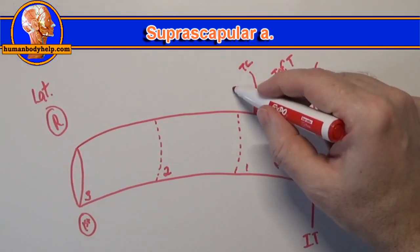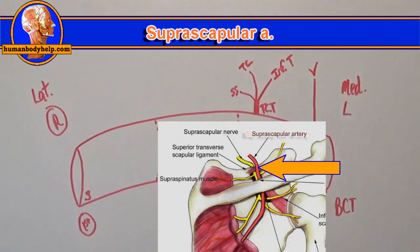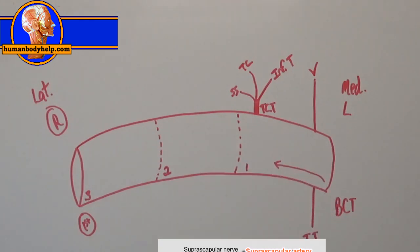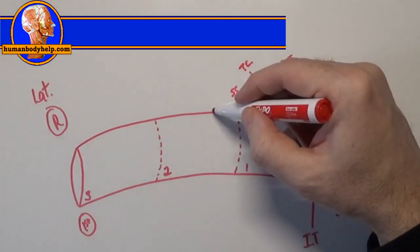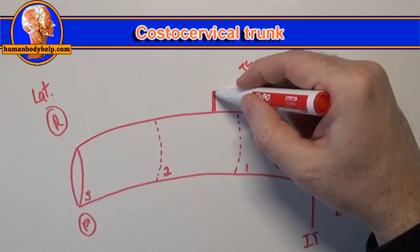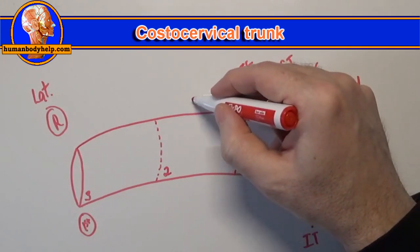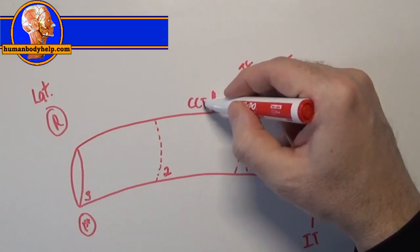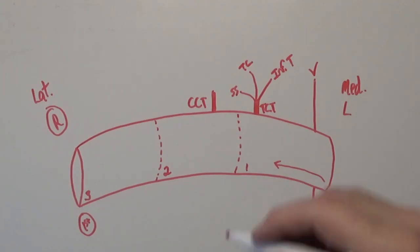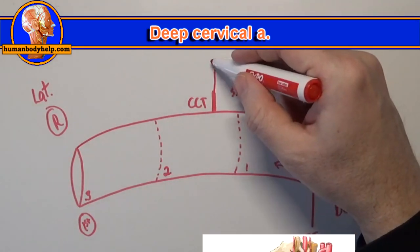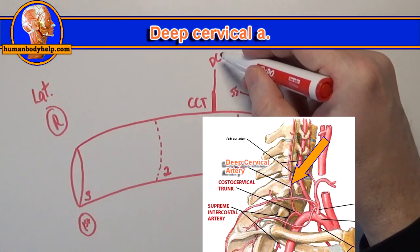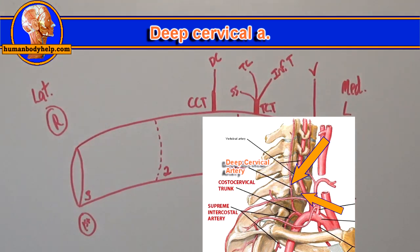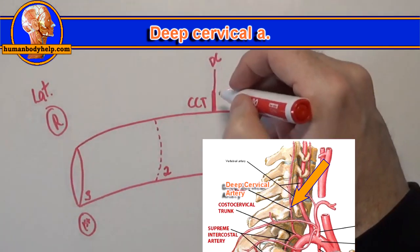The second part of the subclavian artery will have one branch, the costocervical trunk. Now I'll draw that close to the medial border of the anterior scalene as well. The costocervical trunk has two branches. The deep cervical artery is going to pass back between the transverse process of C7 and the neck of the first rib to run up the back of the neck. The supreme intercostal artery is going to supply the first two intercostal spaces.